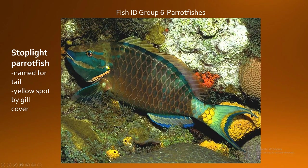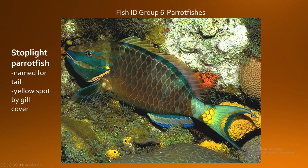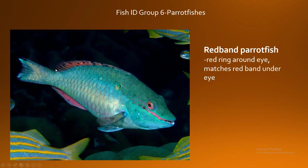Here's another view of the stoplight parrotfish with that yellow gill spot. The last of our parrotfishes is the red band parrotfish — another incredibly common member of our reef community here in Florida. It's smaller than the stoplight parrotfish. You'll notice that its tail doesn't have those same trailing ends — the stoplight parrotfish has a tail with long, dangly trailing tips, while the red band parrotfish has a much more tapered, traditional, emergent tail.